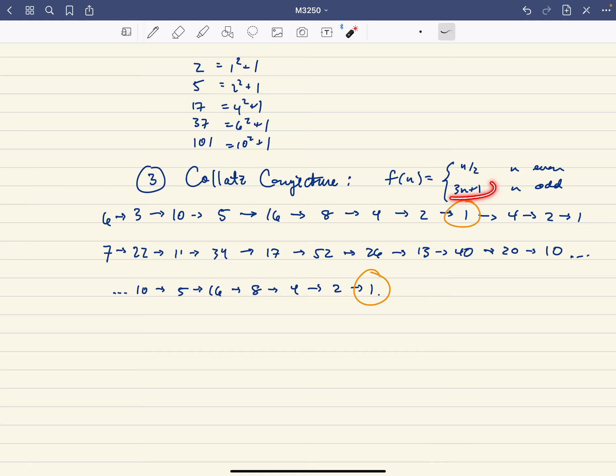And then notice that 3n + 1, if n is odd, 3n + 1 is even. So the next step, as soon as you multiply by 3 and add 1, the next step is divide by 2.